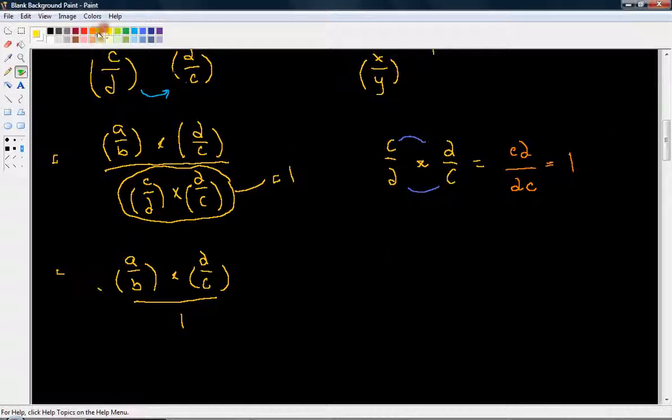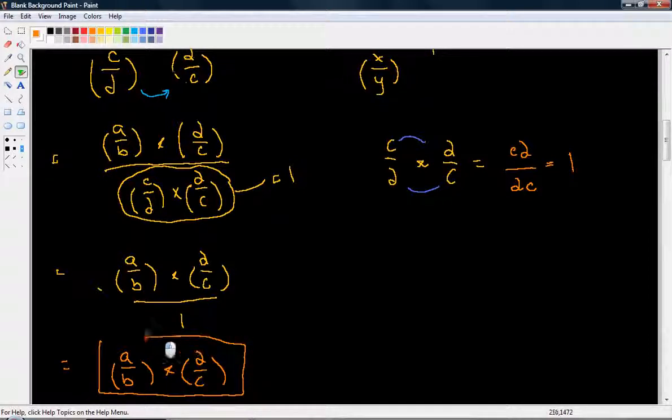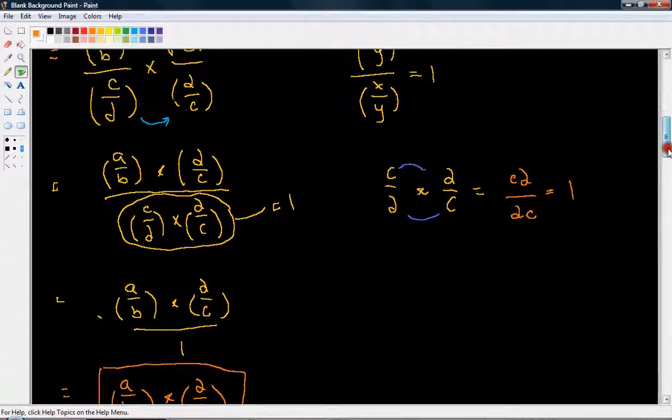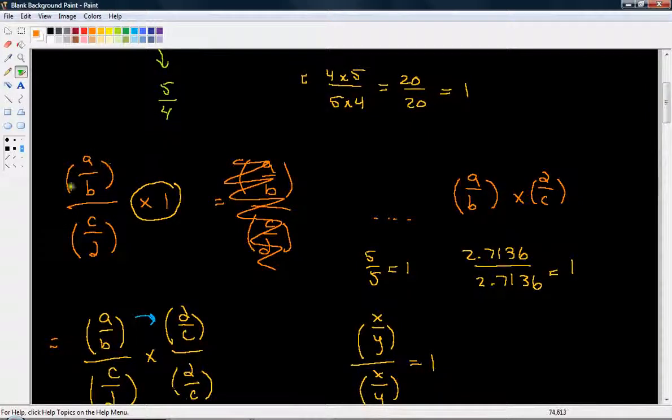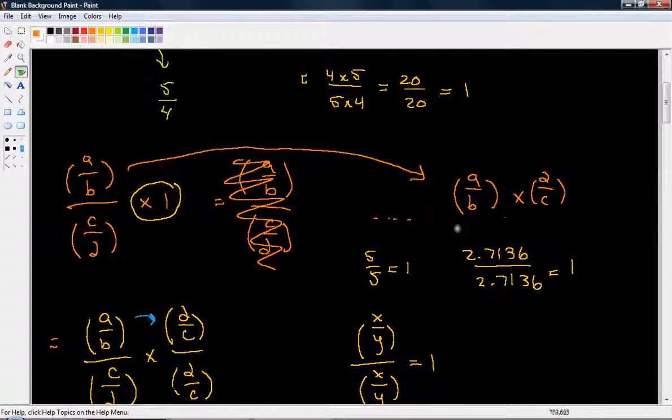So moving back to over here, what we're left with is A over B times D over C. And this is really what I wanted to show, how we get to this rule. So we started out, we had a fraction, A over B divided by C over D. And we wanted to end up showing how it got to here. Explain the rule, why we just take the reciprocal and multiply it by the top fraction.